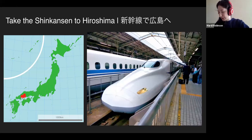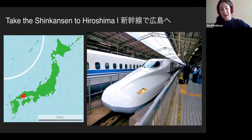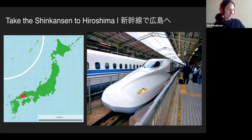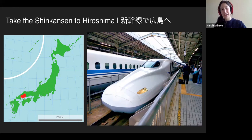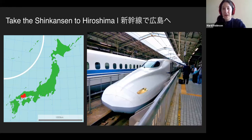Moving on from Osaka, we hop on the Shinkansen. I'm very jealous of those who can go on a tourist visa and get the Japan Rail Pass, which allows you to take the Shinkansen pretty much an unlimited number of times wherever you want to go for one set price for a period of time. It's a really convenient way to get around the country and you can take it to pretty much all the major cities. There is a stop in Hiroshima.